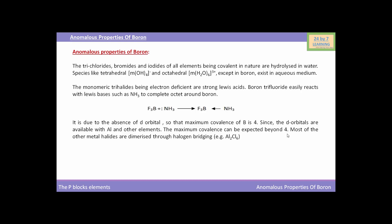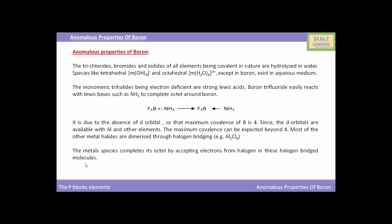Most other metal halides are dimerized through halogen bridging. For example, aluminium chloride forms Al2Cl6. The metal species completes its octet by accepting electrons from halogens in these halogen-bridged structures.